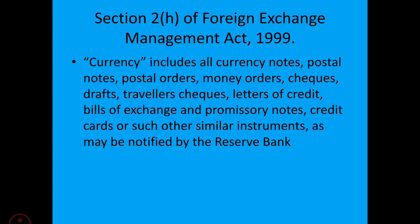Bill of exchange. A bill of exchange is an instrument in writing containing an unconditional order signed by the maker, directing a certain person to pay on demand or at a fixed or determined future time, a certain sum of money. Promissory note. A promissory note is a signed document containing a written promise to pay a stated sum to a specified person or to the bearer at a specified date or on demand.